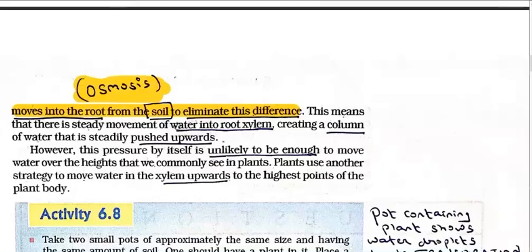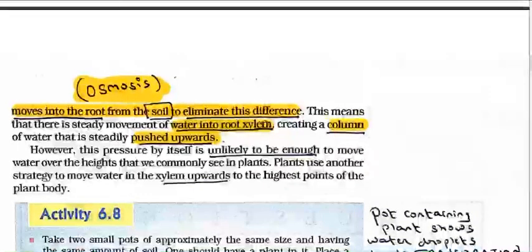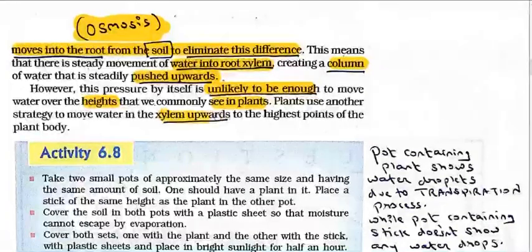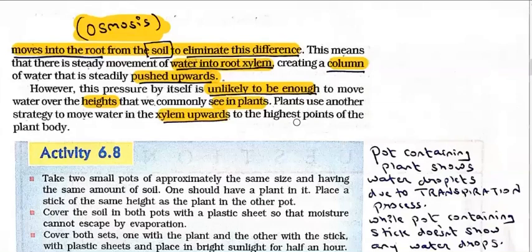This creates a steady movement of water into the root xylem, creating a column — this is root pressure. However, this pressure alone is unlikely to be enough to move water over the heights we commonly see in plants. Plants use another strategy to move water in the xylem upward to the highest point of the plant body. For a big tree, the xylem channel alone is not sufficient to push water and mineral salts to every part.